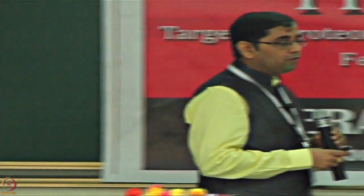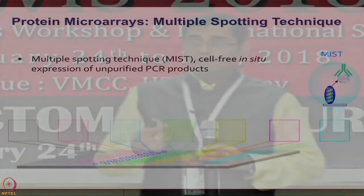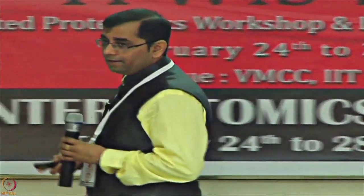Building on NAPPA, another group came forward with Multiple Spotting Technology, or MIST, where the intention was to take unpurified PCR based products and directly use those to print on the chip, then still do in vitro transcription and translation. The goal was that without purifying the protein — which is a difficult thing — you could still generate protein content and do assays in a very high throughput and robust manner. But each method has its own pros and cons, which we will keep discussing as we go along.